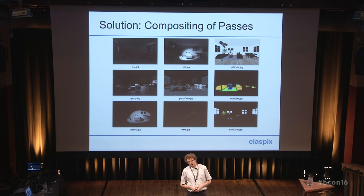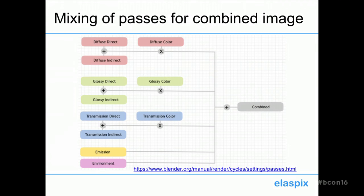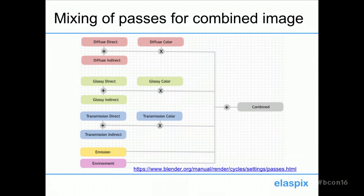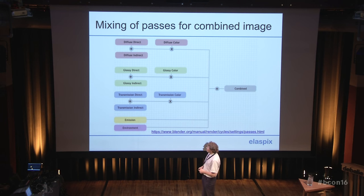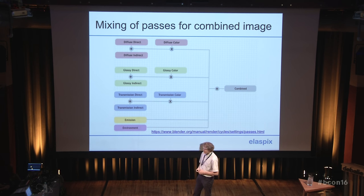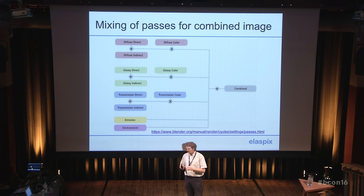To answer this, we can go into the Cycles manual where there is an illustration — and this is the most important slide of my talk. It defines mathematically how all those render passes can be combined to achieve the combined image. The combined image is the default render output of Blender. If you render all those passes — diffuse direct, diffuse indirect, translucency, and so on — and combine them as shown, where plus means add the passes and a cross means multiply the passes, then you get the combined image. You can compare it to the combined image coming directly out of Blender and there is no difference. This is how compositing in Blender works.